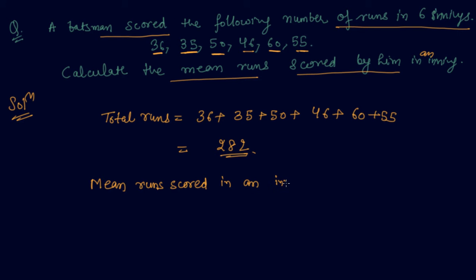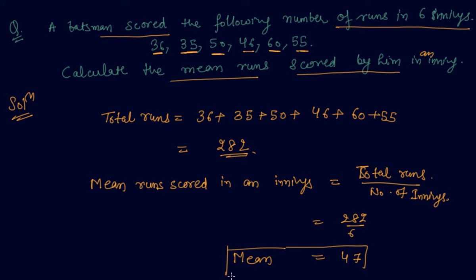This will be 282 upon 6, so I can write this is 47. Mean runs are 47, so he is a pretty good batsman.